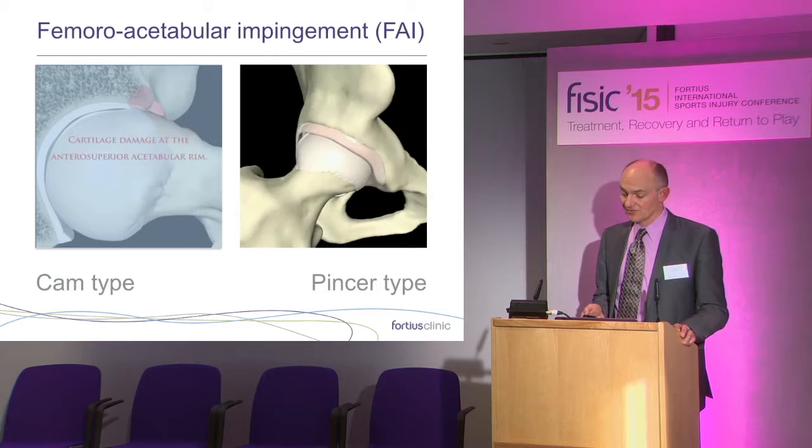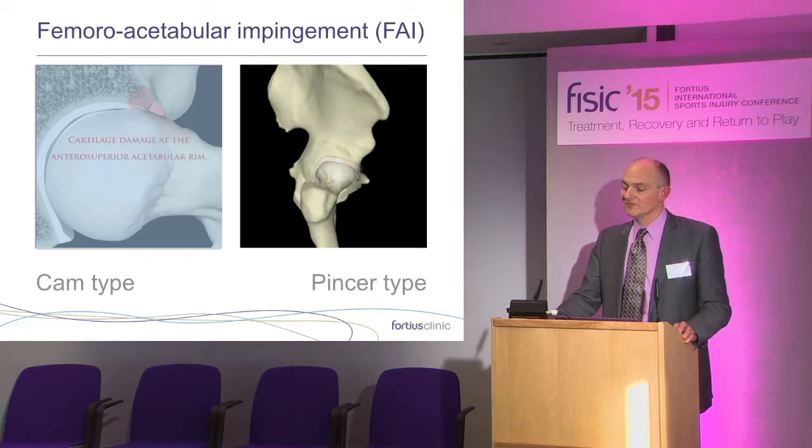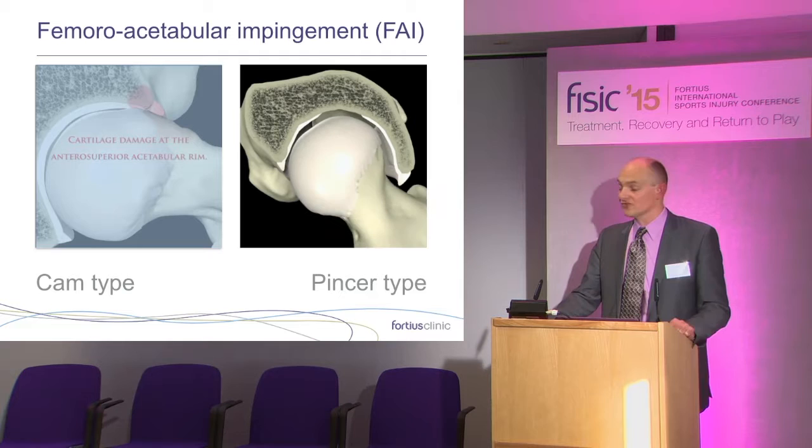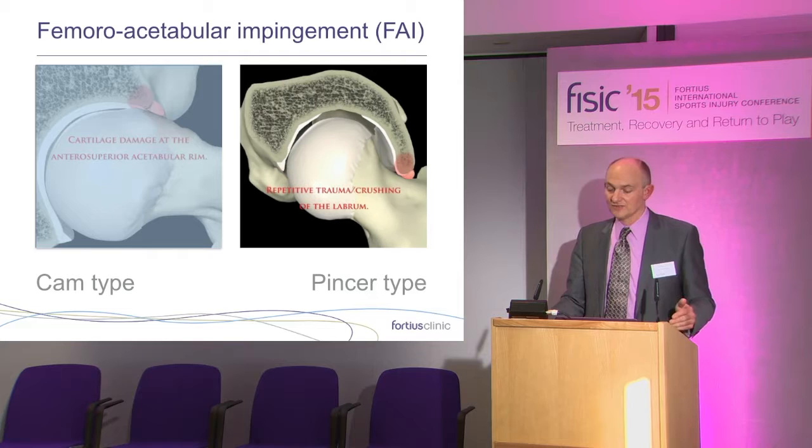With pincer impingement, the main problem is prominence of the anterior rim of the acetabulum. So when the hip flexes up, the main conflict is between the anterior rim of the acetabulum and the femoral neck. Pincer impingement is really characterised by severe labral injury. The labrum is densely innervated, and therefore this is very painful when you get labral tears in these patients.